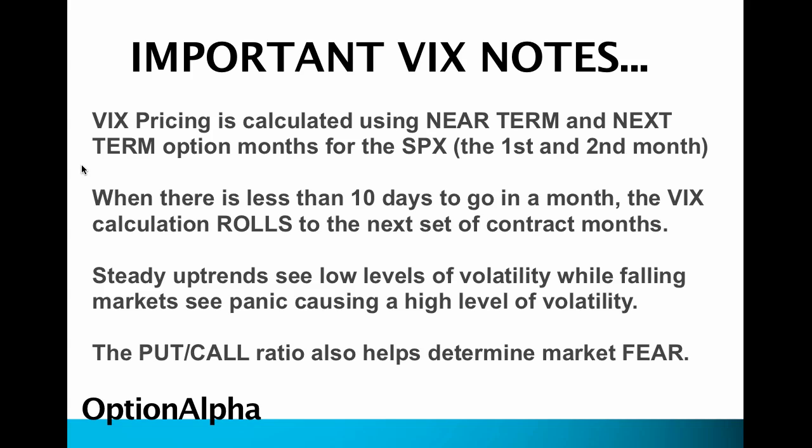Some important notes about the VIX: the VIX pricing is calculated using near-term and next-term options for the S&P 500 — this is the first and second month of expiration. When there's less than 10 days to go in a month, the VIX calculation rolls or jumps to the next set of contract months.